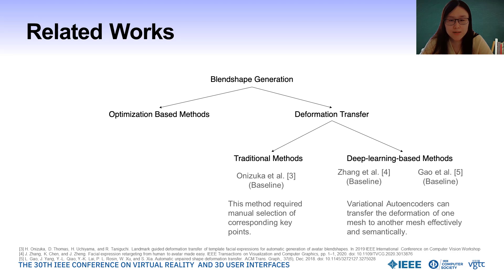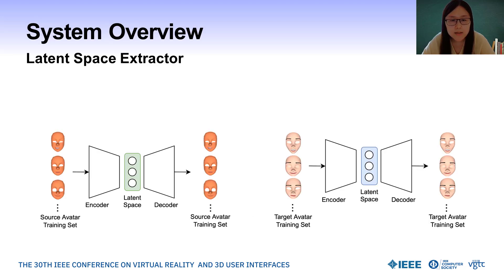Some recent studies have demonstrated that deep learning models such as VAEs can efficiently and systematically transfer deformation from one mesh to another. Our method is inspired by those VAE approaches and uses them to transfer the deformation of blend shapes from a source avatar to a target avatar. Additionally, we evaluated all methods by comparing them to three baseline deformation transfer methods.